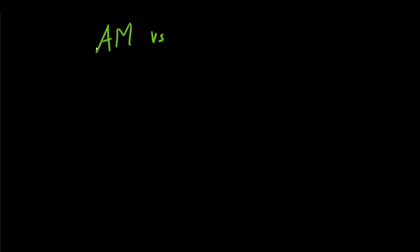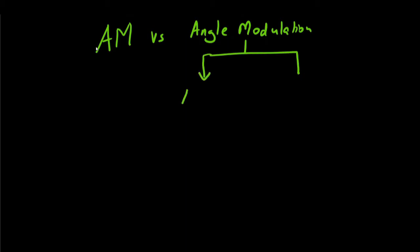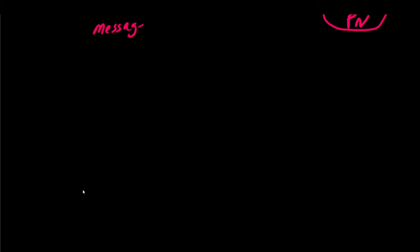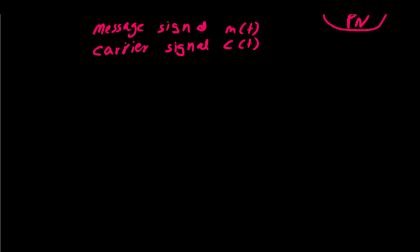In this video we are going to look into the marked differences between amplitude modulation versus angle modulation. Within the criteria of angle modulation we have frequency modulation and phase modulation. Let us first address the mathematical aspects before moving towards the visualization of these modulation schemes. We have a message signal m(t) and a carrier signal c(t) which translates to a high frequency.